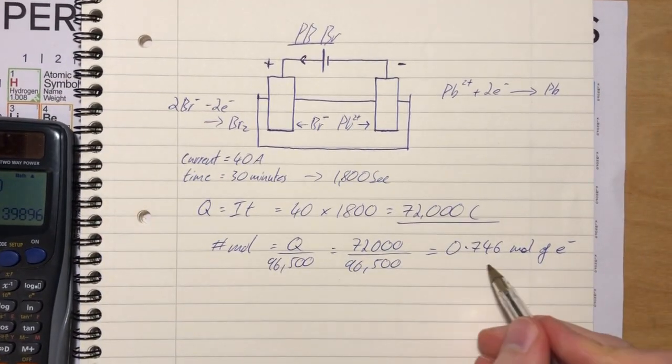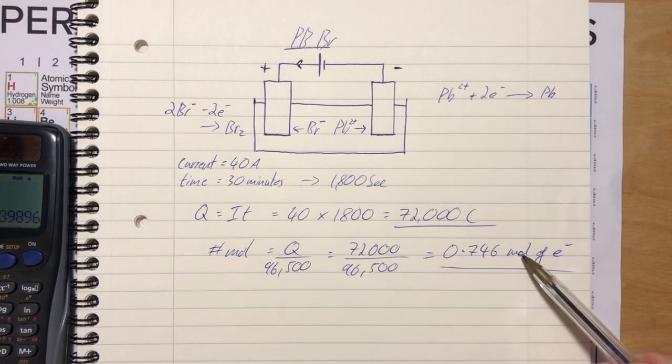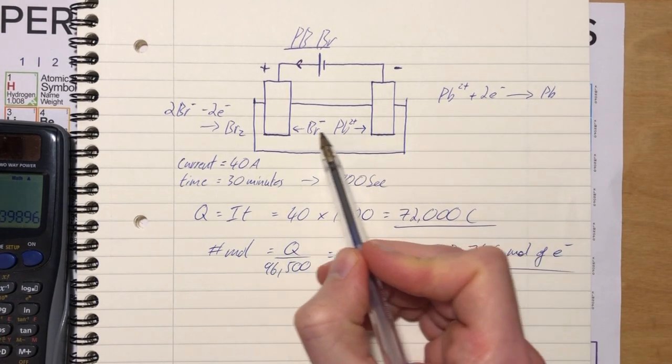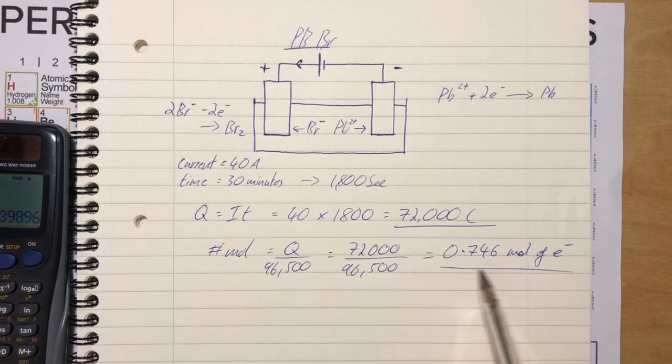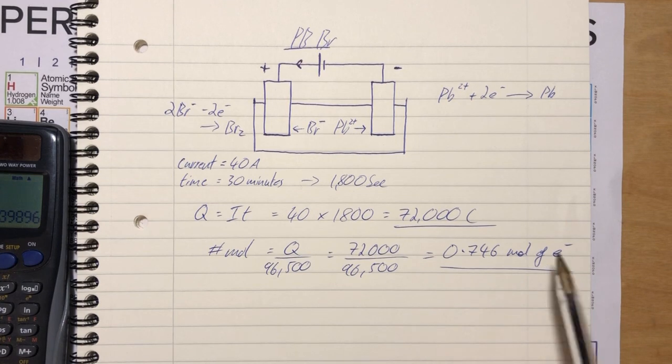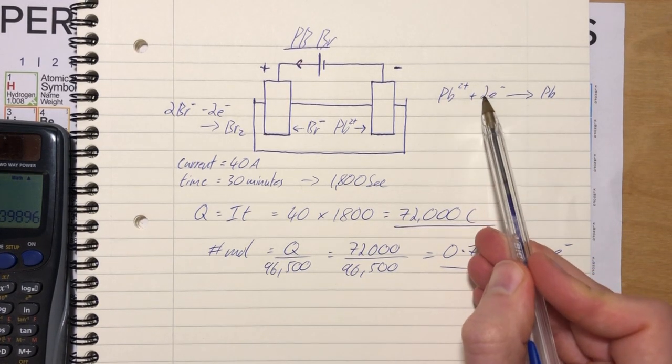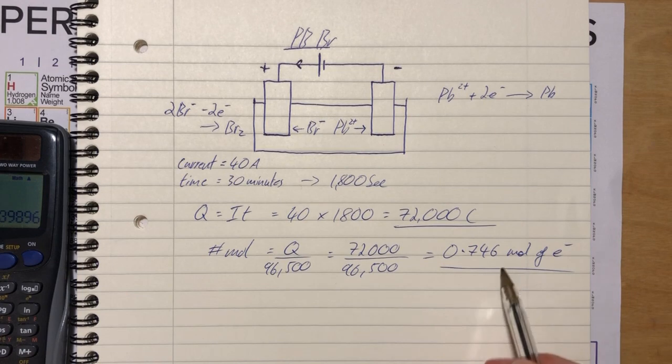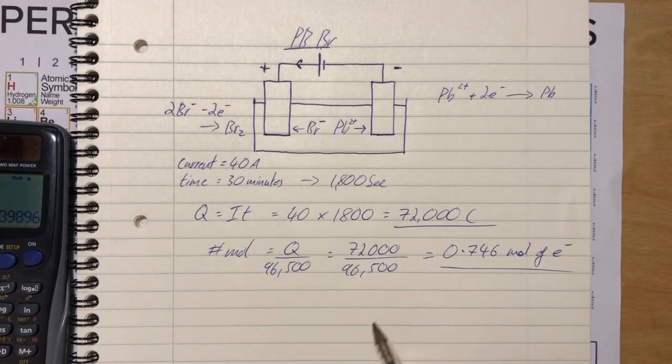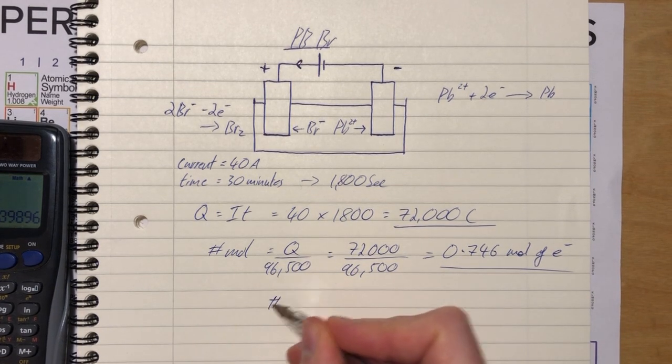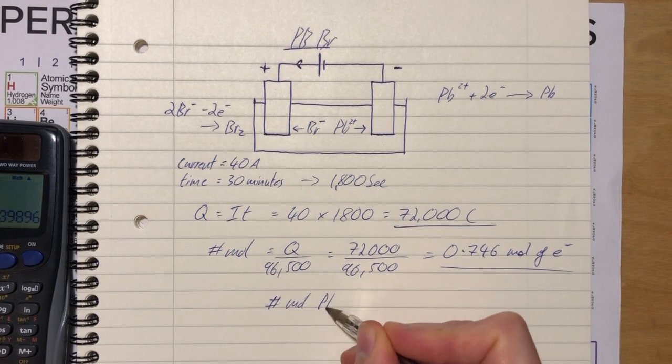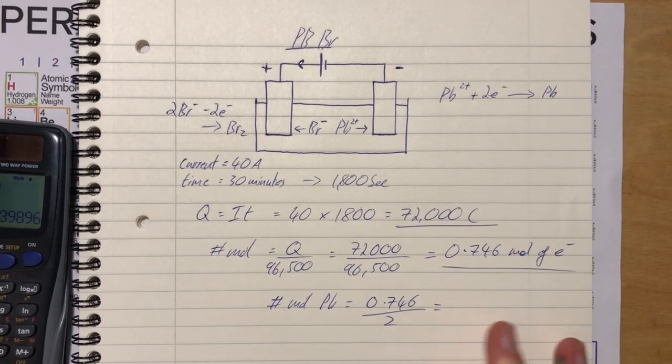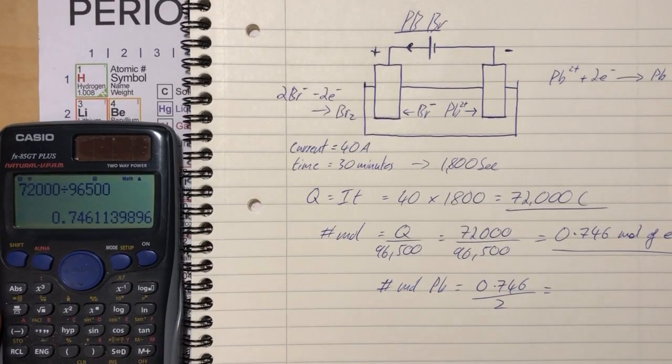Let's come back to our equations. We've counted how many electrons flowed through in 30 minutes. From the cathode equation, we need two electrons for every atom of Pb. So if we have this many moles of electrons, we must have half that number of Pb atoms.